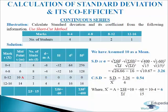Now we will calculate CSD, that is coefficient of standard deviation, which equals to SD divided by mean. We have to take actual mean, so we will calculate mean: mean equals to a plus sigma fd divided by sigma f. Putting in the values we get 6 as mean. So 3.26 divided by 6 gives us 0.54 as coefficient of standard deviation. This is how we calculate standard deviation and its coefficient in continuous series using shortcut method.